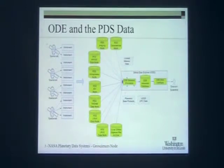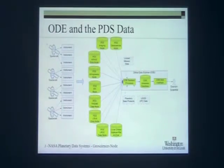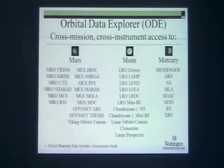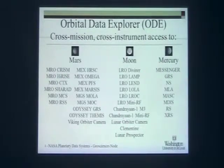As part of that, we go through some normalization of the data, particularly on things like location data, where you might have different planetary coordinates or different positive longitude conventions. We process and normalize it so you can do cross-mission, cross-instrument searches on the surface of Mars and get the right data without having to worry about whether an older dataset used positive longitude west rather than positive longitude east. Right now, the Orbital Data Explorer supports MRO, MEX, some Odyssey, LRO, and MESSENGER. We also have older datasets like Clementine, Lunar Crosssfire, the Lunar Orbiter Camera, and the Viking Orbiter Camera. We even have some Chandrayaan datasets in the system, so you can do cross-mission searches against all of those.